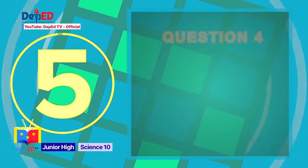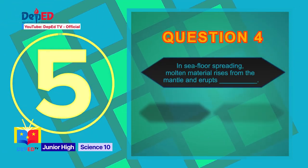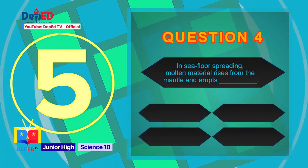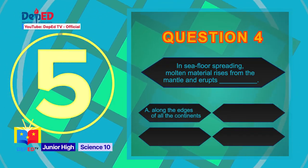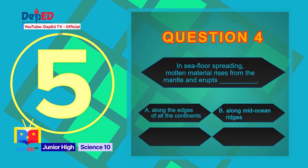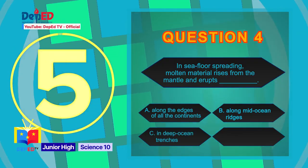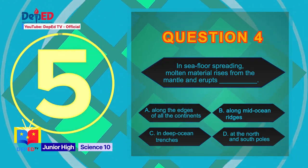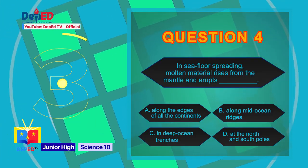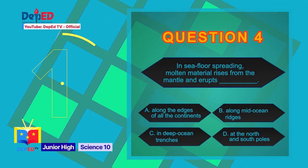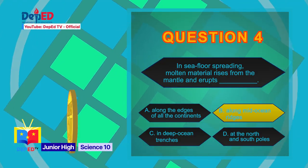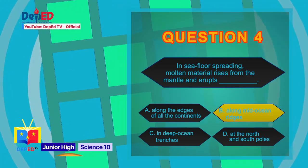Question number 4: In seafloor spreading, molten material rises from the mantle and erupts — A) along the edges of all the continents, B) along mid-ocean ridges, C) in deep ocean trenches, or D) at the north and south poles. The correct answer is letter B: along mid-ocean ridges.